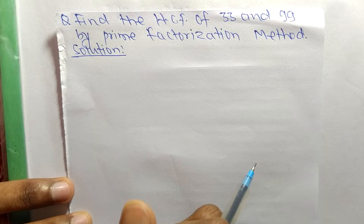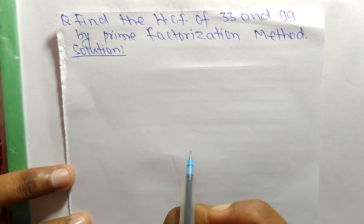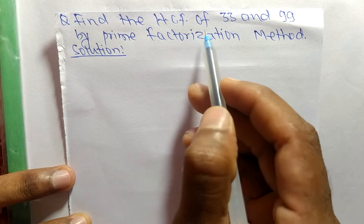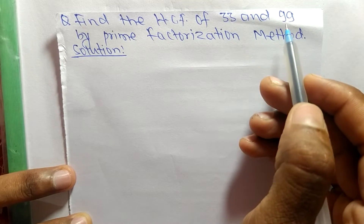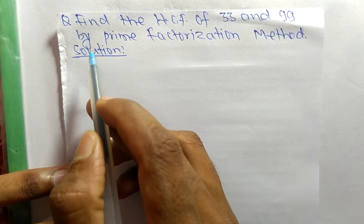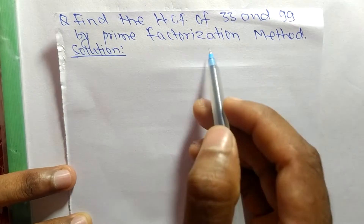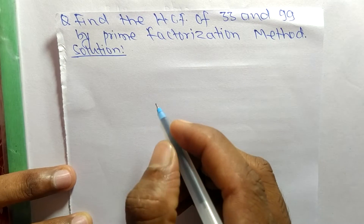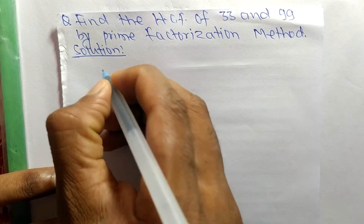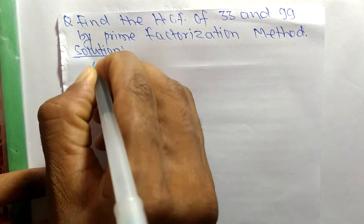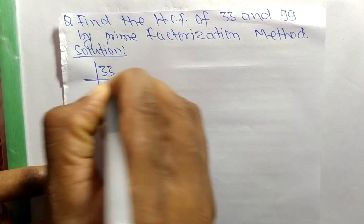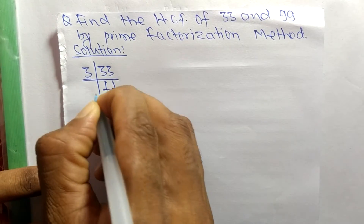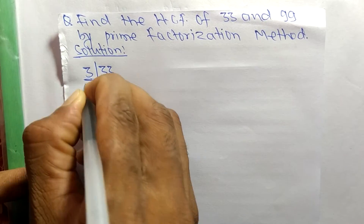Today in this video we shall learn to find the HCF of 33 and 99 by prime factorization method. First, we find out the prime factors of 33, which is 3 times 11, meaning 33.